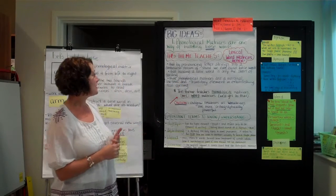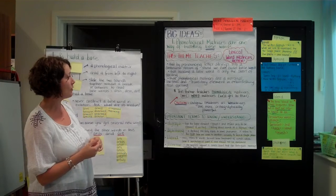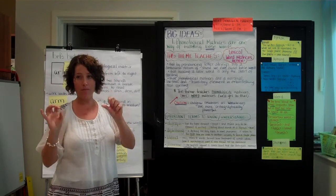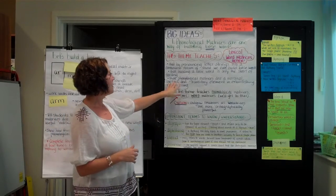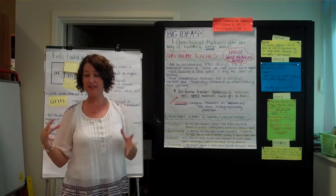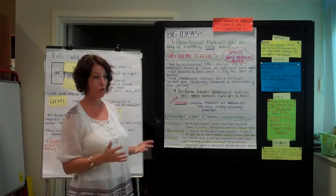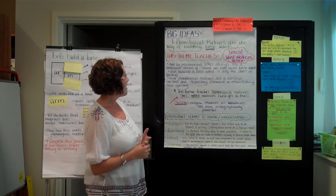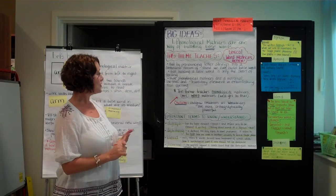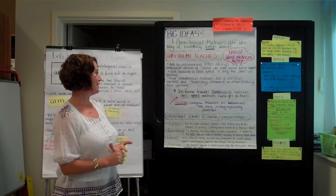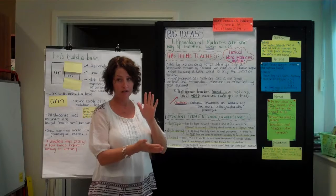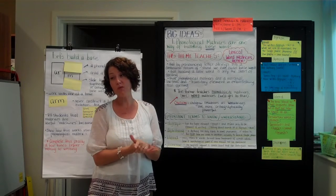The theme teaches that by pronouncing letter strings into a continuous stream of sound, we can build base words — and that's important because we're not going to break them up in order to make the base. Building a base word is only the start of spelling, because after that comes the prefixes and suffixes and the generation of many more words that are part of the family. He states in the theme that the phonological matrices are a marginal, low-level, and transitory element in establishing real spelling — essentially something we want to outgrow quickly if we use it at all.